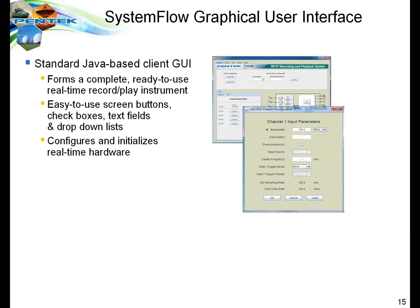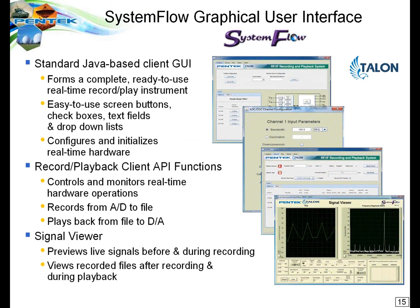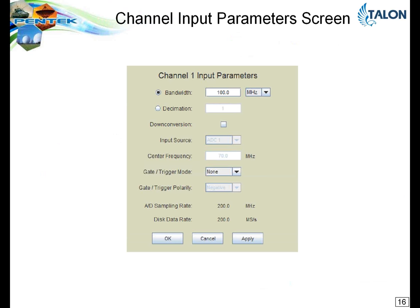The Pentech client interface is a Java-based GUI — a very intuitive push-button operation. We have recording and playback client functions on screens you operate with a mouse and keyboard. We also have a convenient signal viewer utility that allows you to look at signals before, during, and after the recording. One of the screens that comes up is the parameter screen for setting up your input channel — an analog input channel where you set the bandwidth, decimation, source, triggering modes, polarity, sampling rates, and so forth. This can all be configured by entering parameters or pulling down selections. Click apply, and you're ready to go on to the next channel setup.